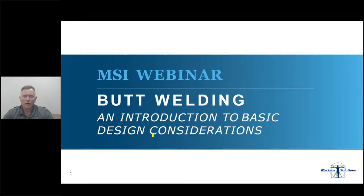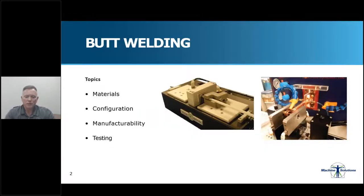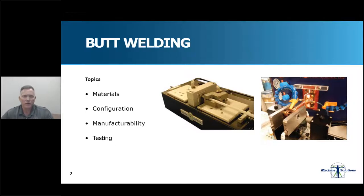Welcome to this portion of Machine Solutions' webinar on tube bonding. I'll be discussing a specific type of tube joining we refer to as butt welding. The Machine Solutions design team defines butt welding as joining the square-cut ends of two tubes together to form one continuous tube. The process uses a combination of heat, pressure, and tooling to direct and constrain the flow of melted polymer into a defined shape. This presentation covers the four main areas to consider as you design a catheter that requires a butt-welded tube section: materials of construction, configurations, manufacturability, and testing.